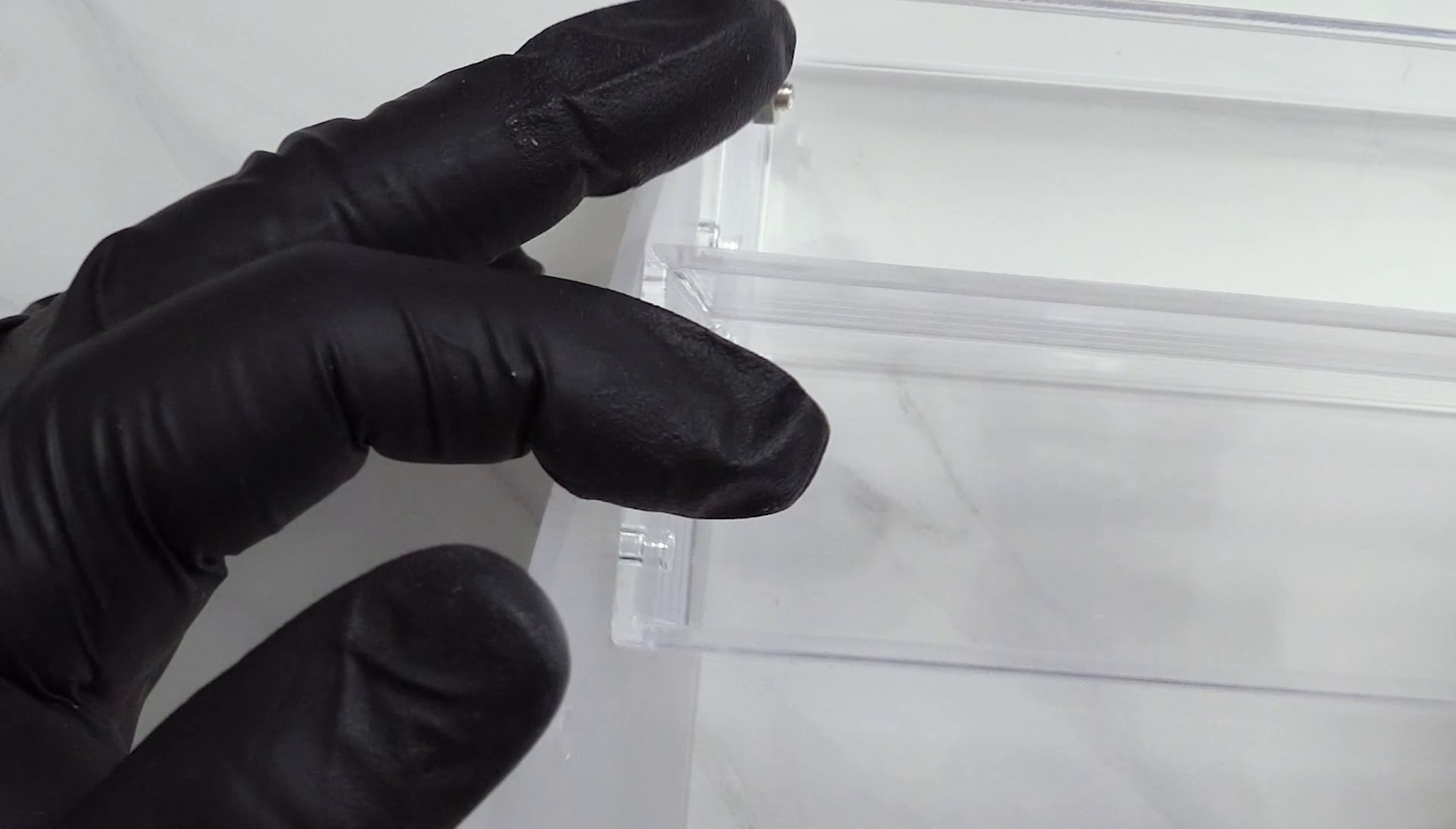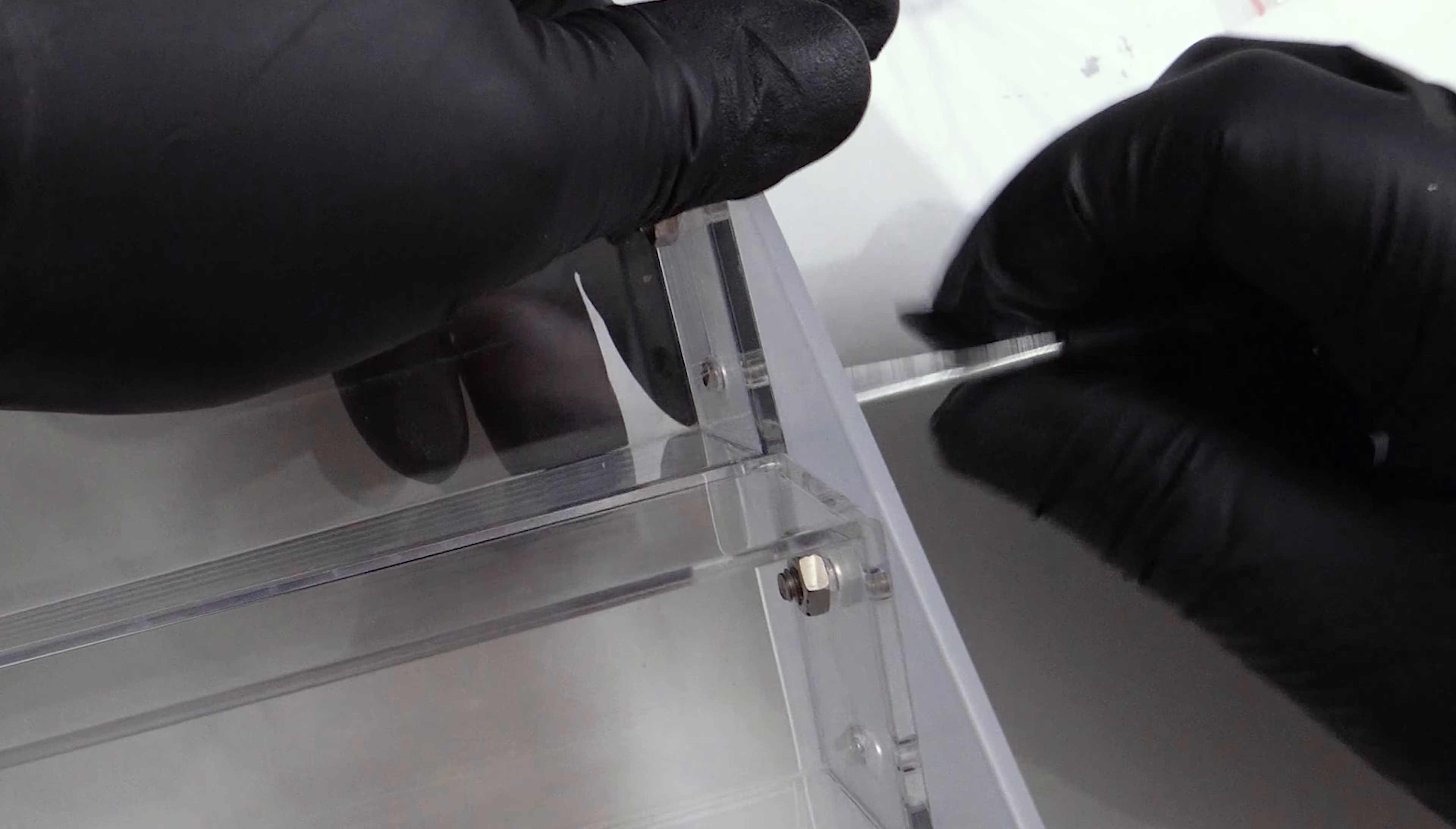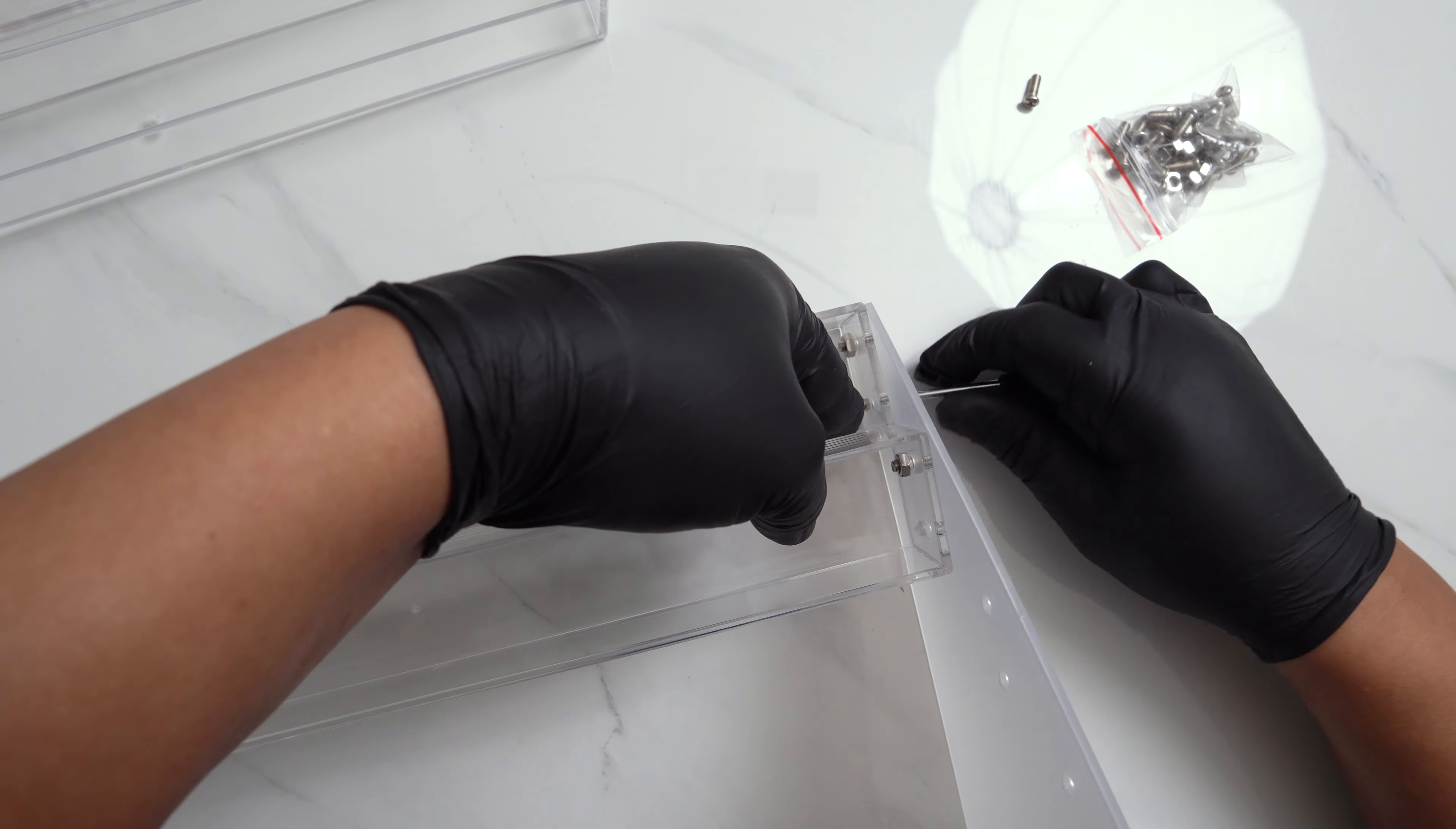So as you guys see I'm just repeating that process, lining those holes up to the side walls of this little organizer, then I'm just putting that screw in, putting that washer in and tightening it up.